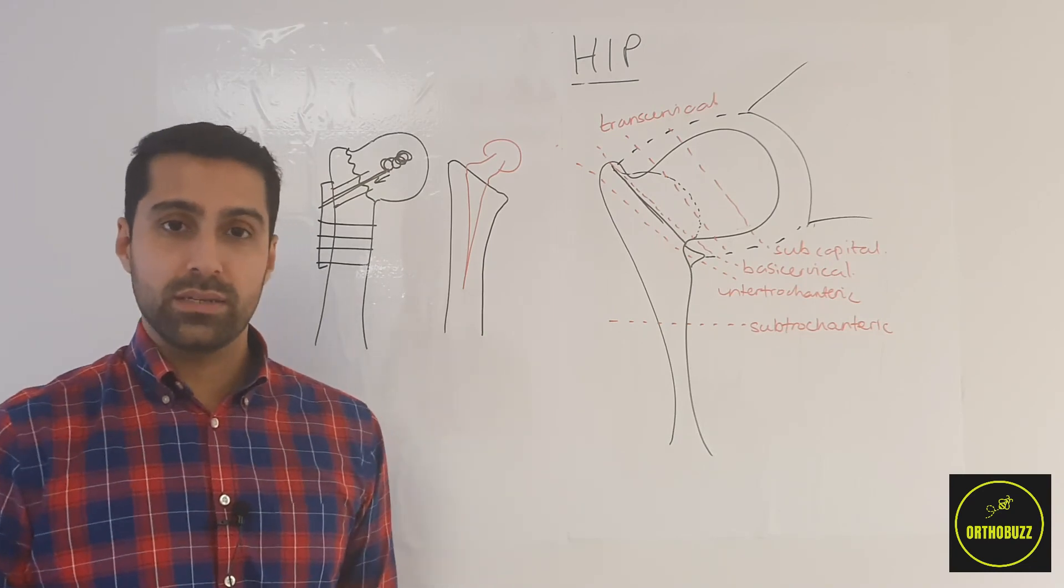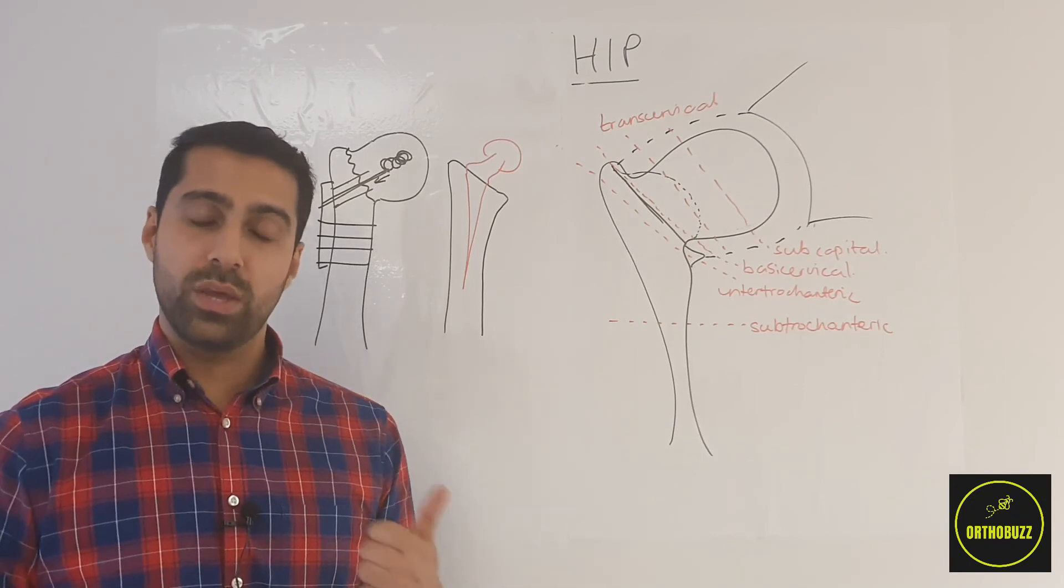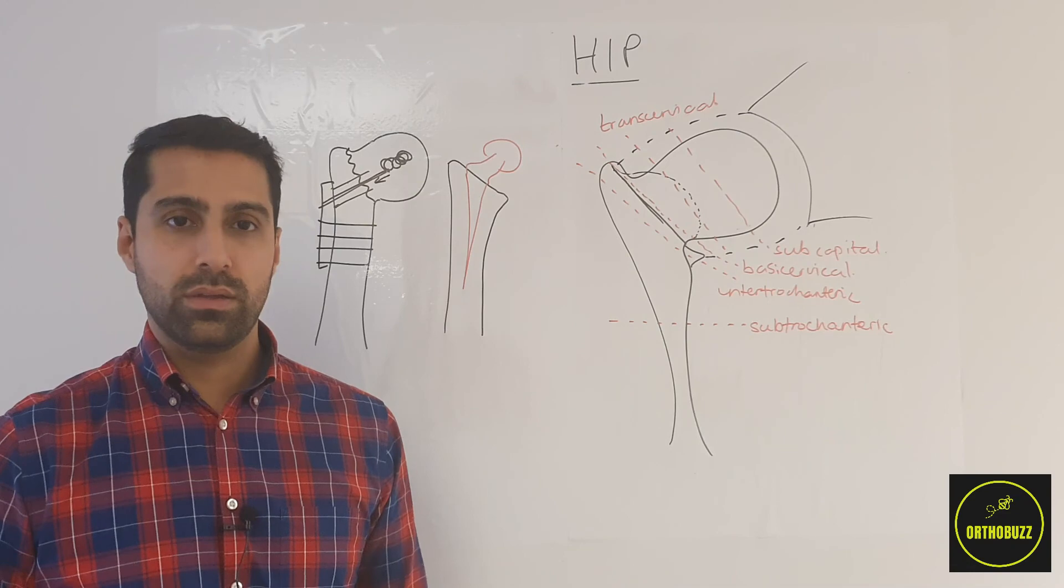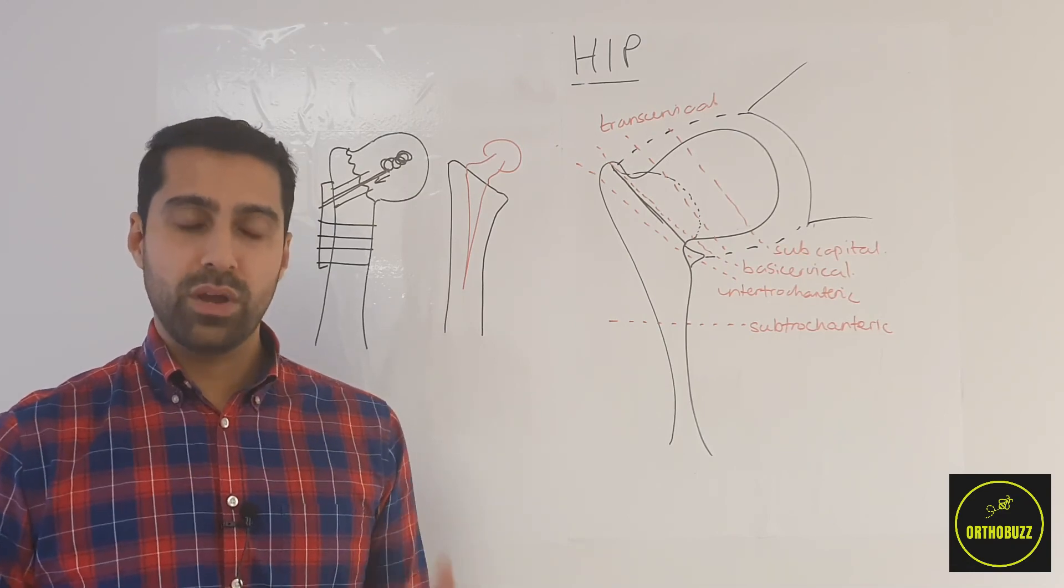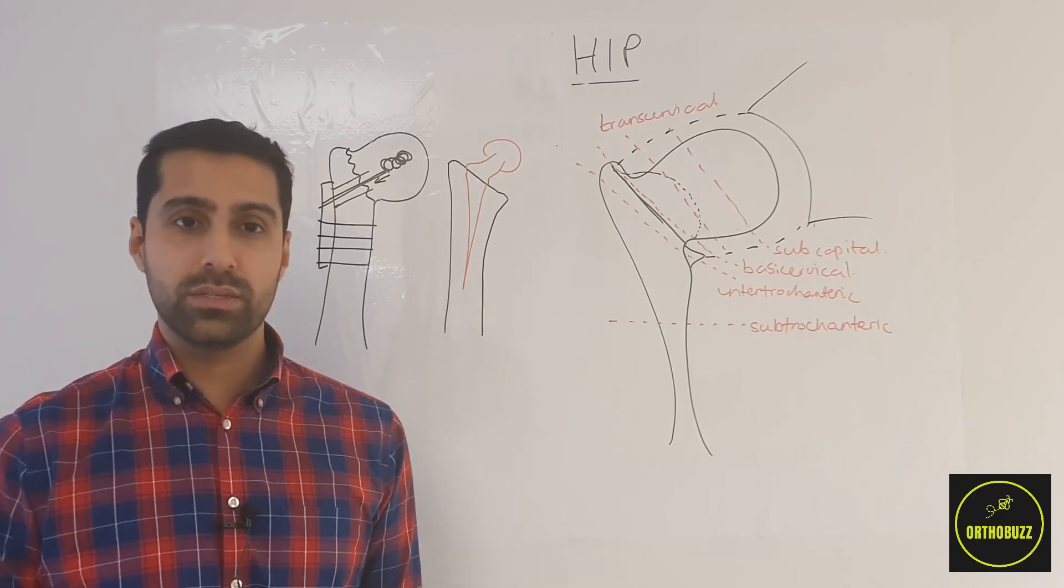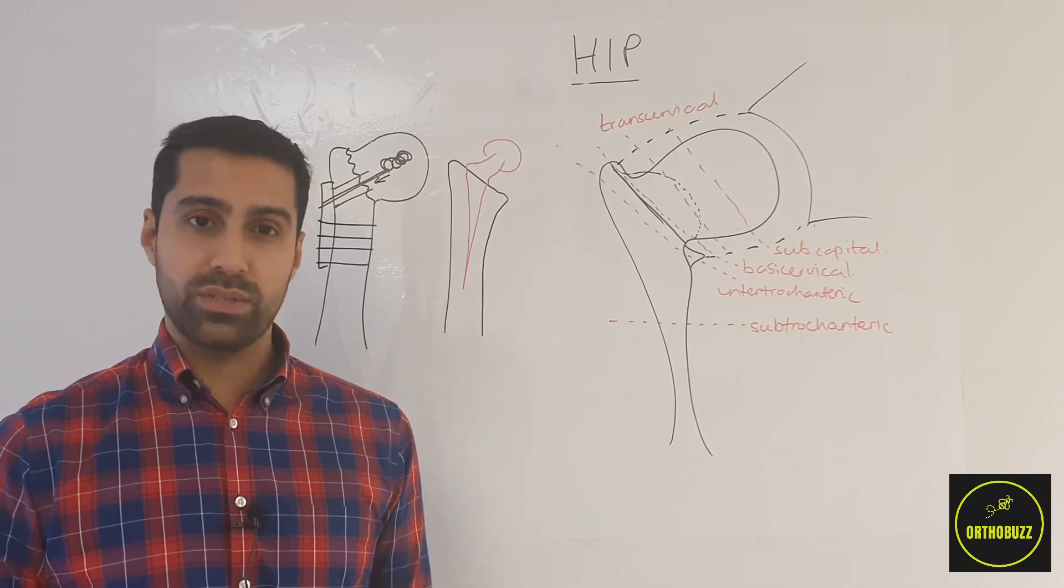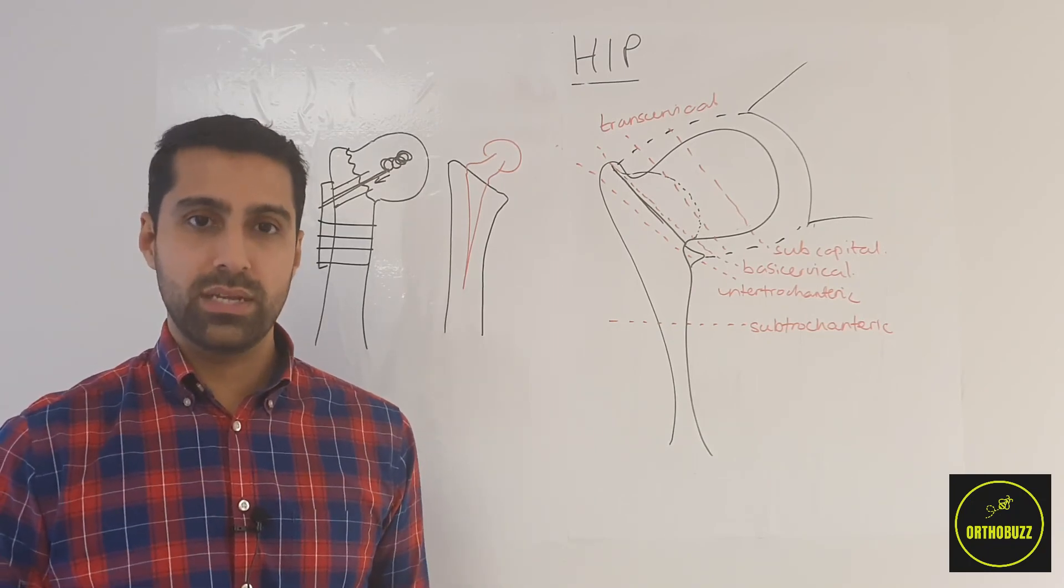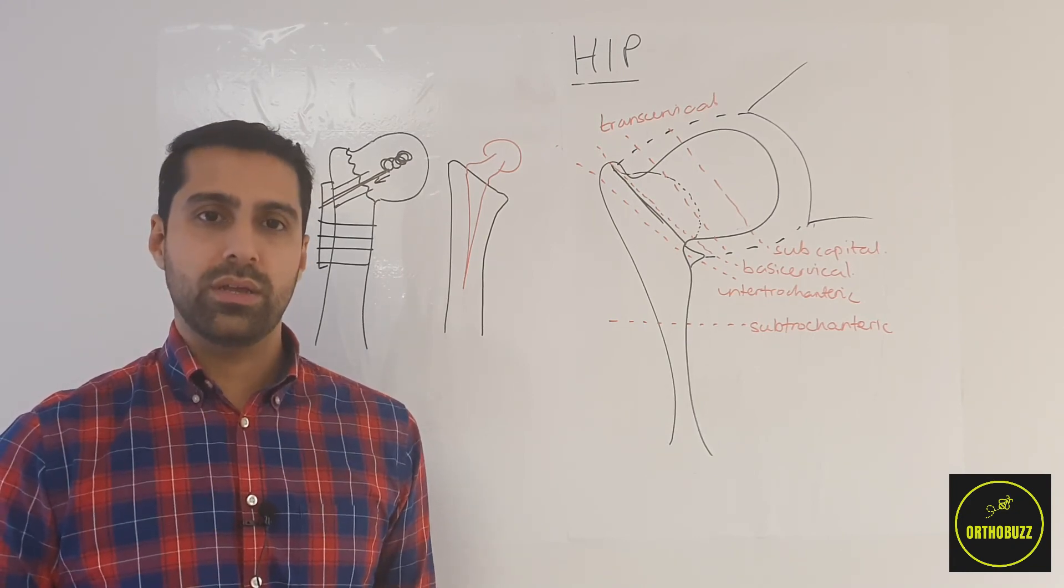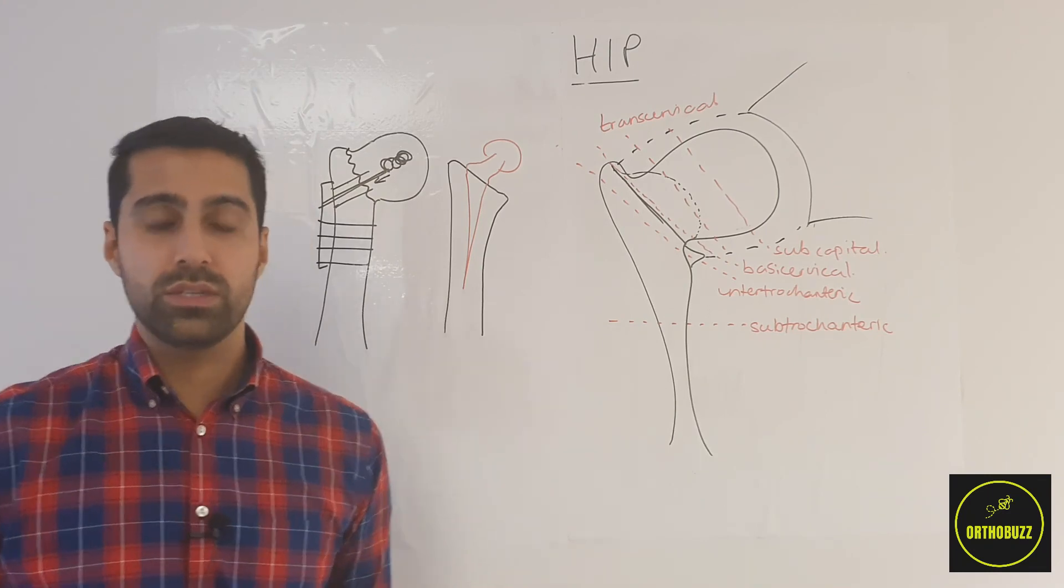So the key points in this case are to assess the patient bearing in mind key points in their history, such as their weight bearing status, their comorbidities, their cognition and the mechanism. To perform a thorough assessment of their neurovascular status. To obtain appropriate investigations, not forgetting that other injuries may be present or there may be a cause to the hip fracture which needs to be investigated or a cause to the fall. And finally, to assess the patient's fracture and therefore whether it's extracapsular or intracapsular and which procedure would be most suitable.